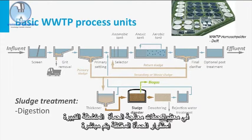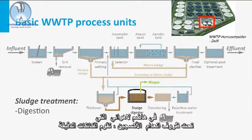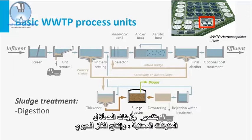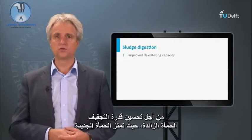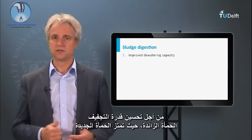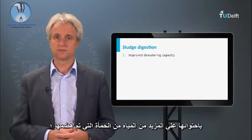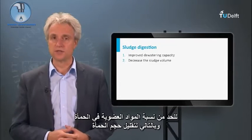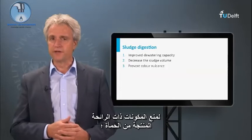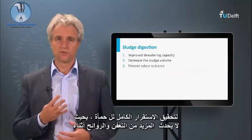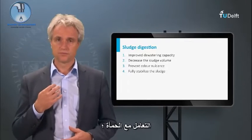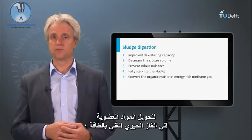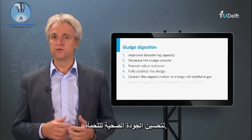In most large activated sludge treatment plants, stabilization of the thickened sludge is performed in an anaerobic digester, where under oxygen-free conditions, microorganisms break down sludge particles to mineral components, producing biogas. From the process point of view, sludge digestion is implemented: 1) to improve the dewatering capacity of the excess sludge; 2) to reduce the organic fraction and decrease sludge volume; 3) to prevent odorous components; 4) to fully stabilize the sludge; 5) to convert organic matter into energy-rich biogas; and 6) to improve the hygienic quality of the sludge.